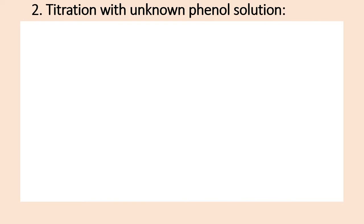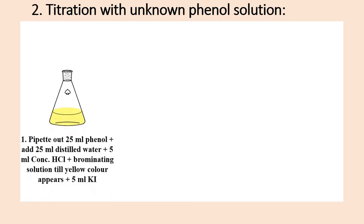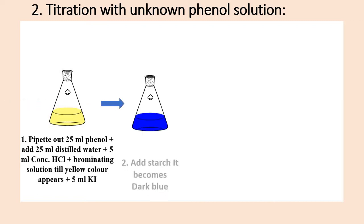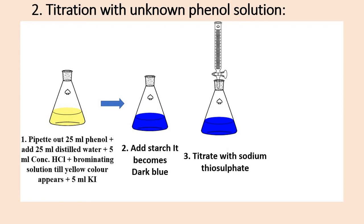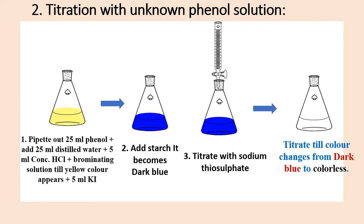Now we will see the second step: titration with the unknown phenol solution. Take 25 ml phenol, add 25 ml distilled water, then 5 ml concentrated HCl, then add brominating solution until a yellow color appears. Add 5 ml potassium iodide — the solution is now yellow. Add starch indicator and the solution becomes dark blue. Titrate with sodium thiosulfate solution until the end point, which is dark blue to colorless. Note down 3 concordant readings.